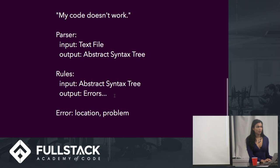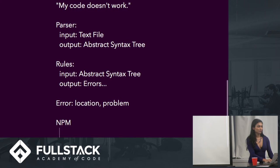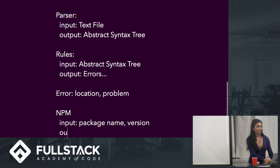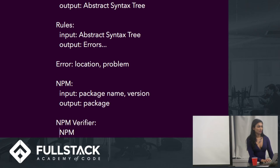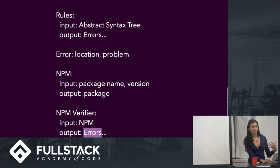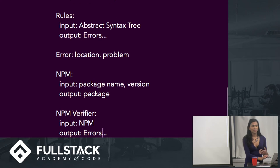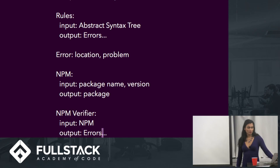So if we wanted to implement that, we would have to have a database of some kind. We have npm, which takes a package name and version and outputs a package. And we have our own npm verifier that for a given npm package will tell us a set of errors. Because these things are going to emit basically the same kinds of problems, we can plug this into our existing architecture.